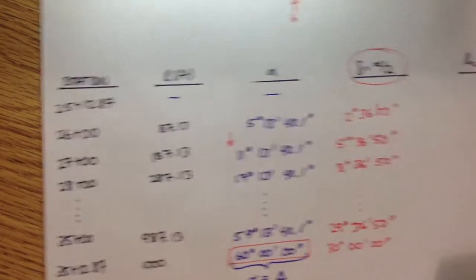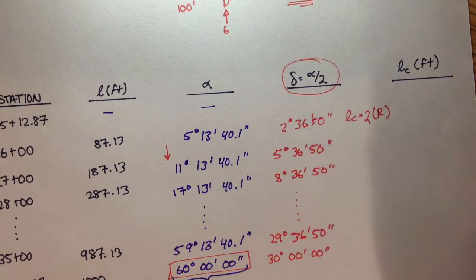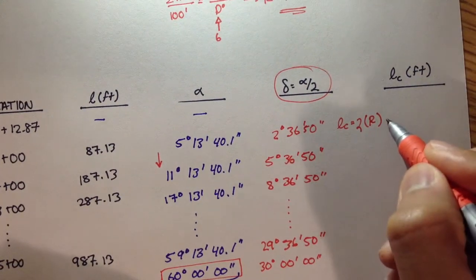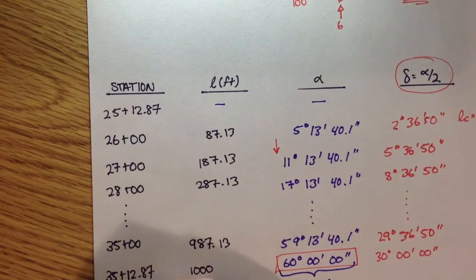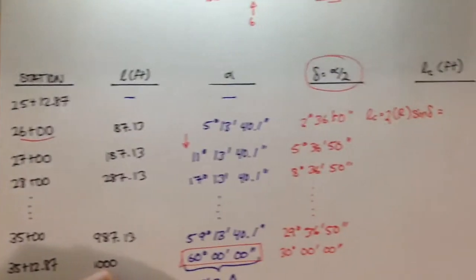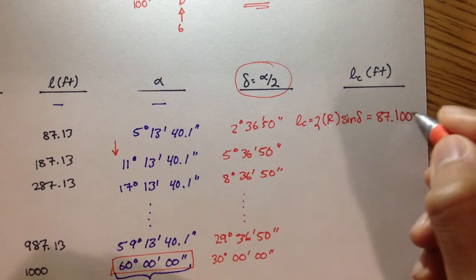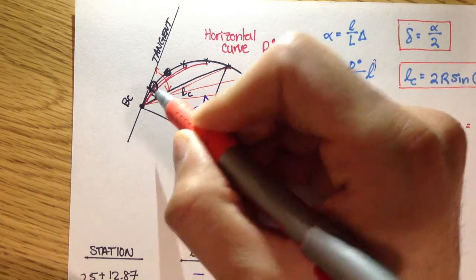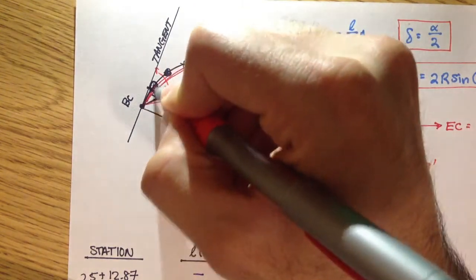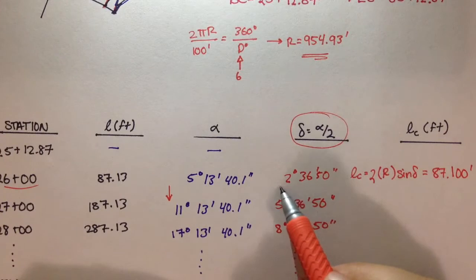So, if I said, okay, we're here at station 26 plus 00, you can say LC is equal to 2 times the radius, and the radius is kind of long, so I don't want to write it down, times sine of the deflection angle, alpha over 2. And if we do that for station 26 plus 00, my LC is 87.170 feet. So, if this was station 26 plus 00, the straight distance from BC to that point would be 87.1 feet, and its deflection angle would be 2 degrees, 36 minutes, 50 seconds.